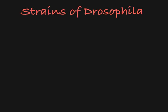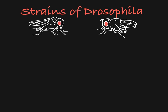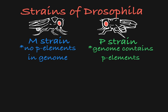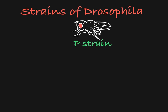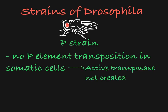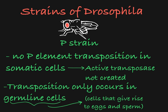When dealing with P elements, there are two strains of Drosophila: the M strain, which does not contain P elements, and the P strain, which does contain P elements. P elements in P strain flies are not just hopping around at any point in the fly's life. In P strain flies, the P element cannot transpose in somatic cells — the cells making up the fly's body, except the germline cells. Transposition can't happen in somatic cells because the splicing event necessary to create active transposase does not occur there. Transposition of the P element can only occur in germline cells of flies, where the splicing event can take place.